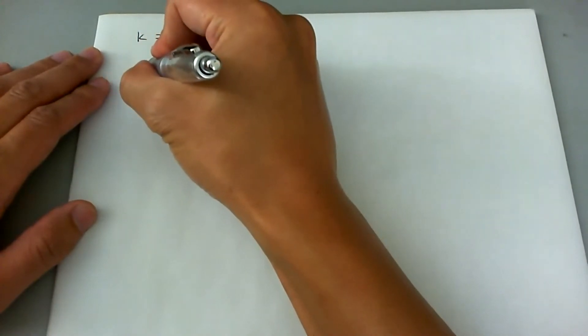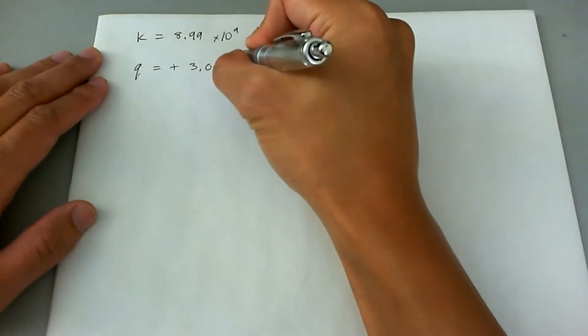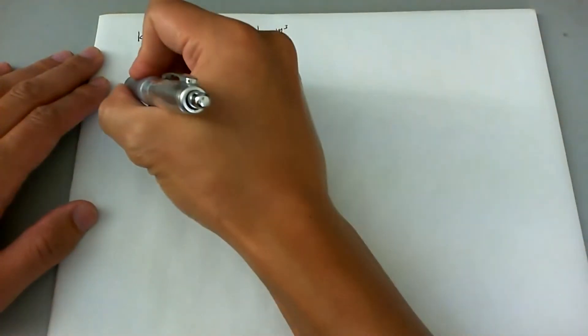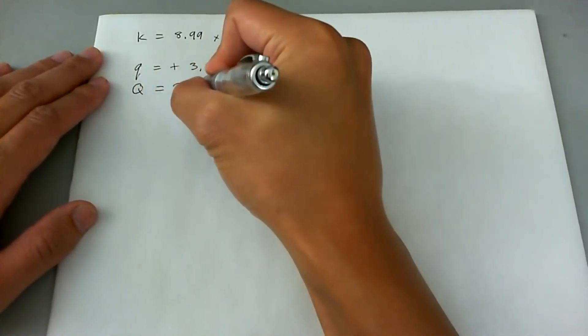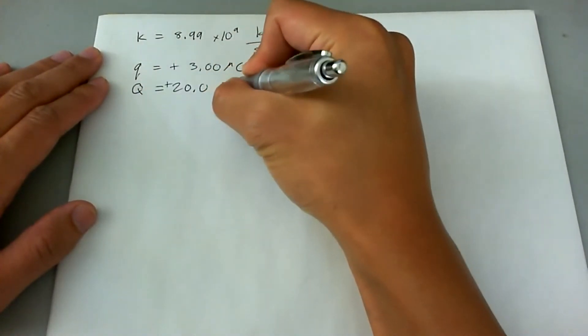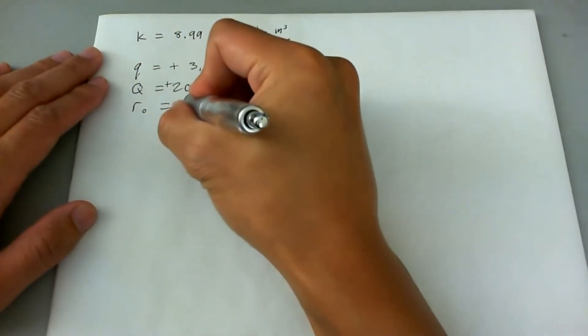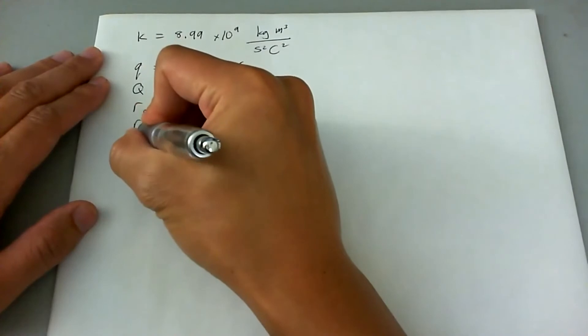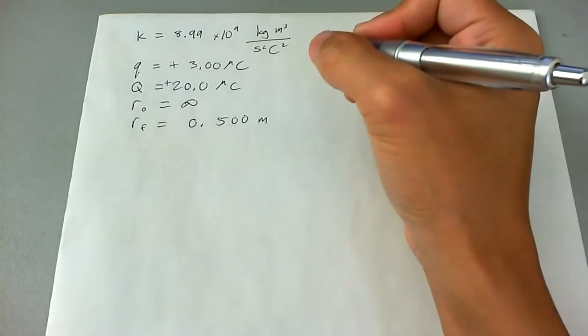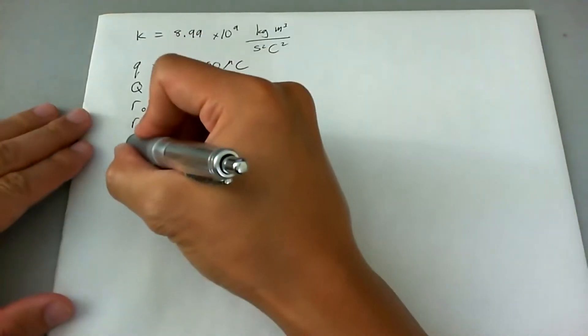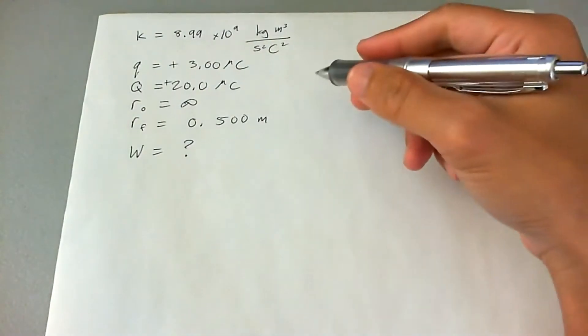We know that the tiny charge that we're moving is 3.00 microcoulombs. We know that the large charge that we're moving it to is 20.0 microcoulombs. We know that we're moving the charge from a distance of infinity to a distance of 0.500 meters. And what we want to find is the work done. So we have our list of knowns and our one unknown.